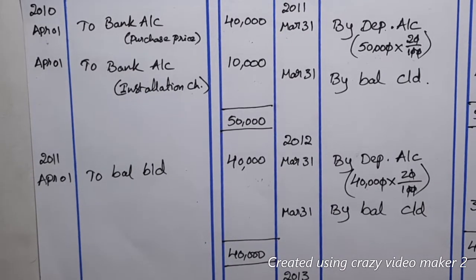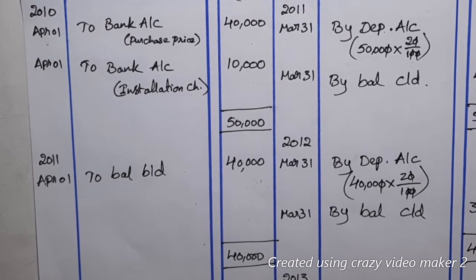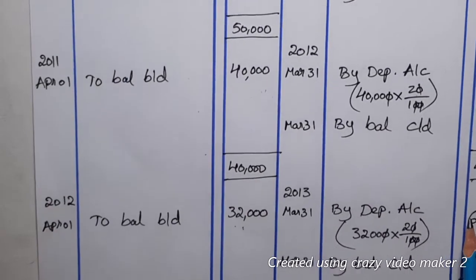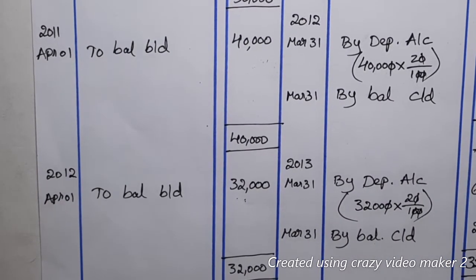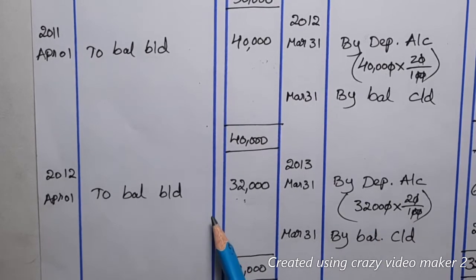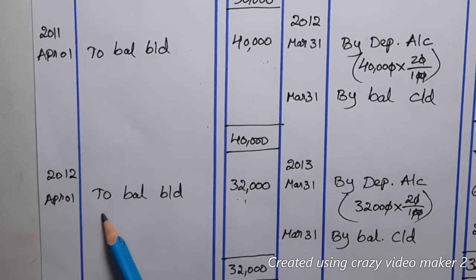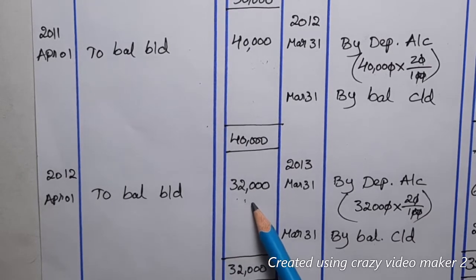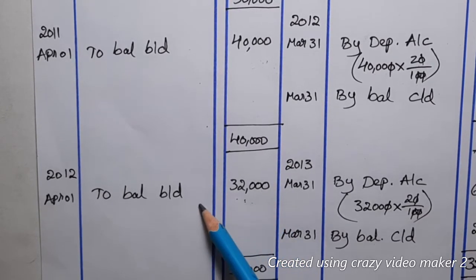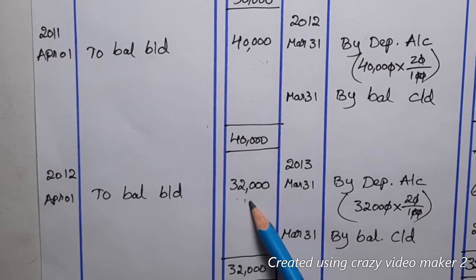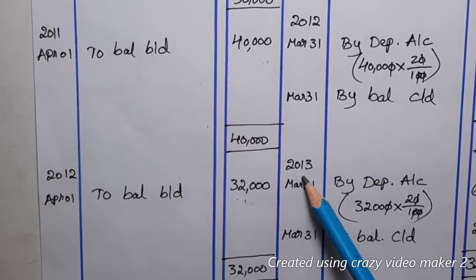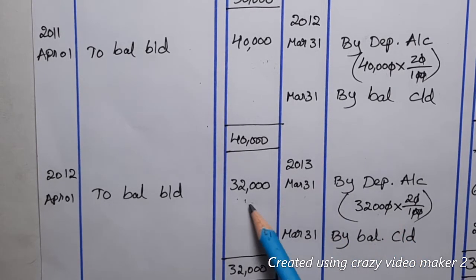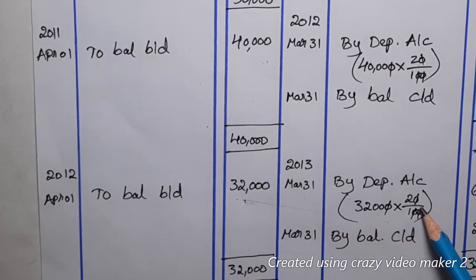The depreciation for Year 2 is ₹8,000, and the balancing figure is ₹32,000. This ₹32,000 is carried down as the balance to the next year. For Year 3 (ending March 31st 2013), we take the brought-down balance of ₹32,000 and calculate 20% depreciation on it.